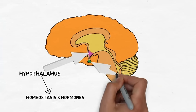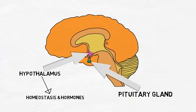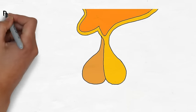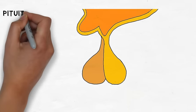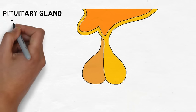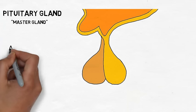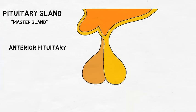The hypothalamus manipulates hormone release primarily by controlling the pituitary gland. The pituitary gland is a hormone-secreting gland that sits just below the hypothalamus. It is sometimes called the master gland because it not only secretes many extremely important hormones, but it also regulates the activity of other hormone-secreting glands throughout the body. The pituitary gland consists of two lobes, called the anterior and the posterior pituitary.